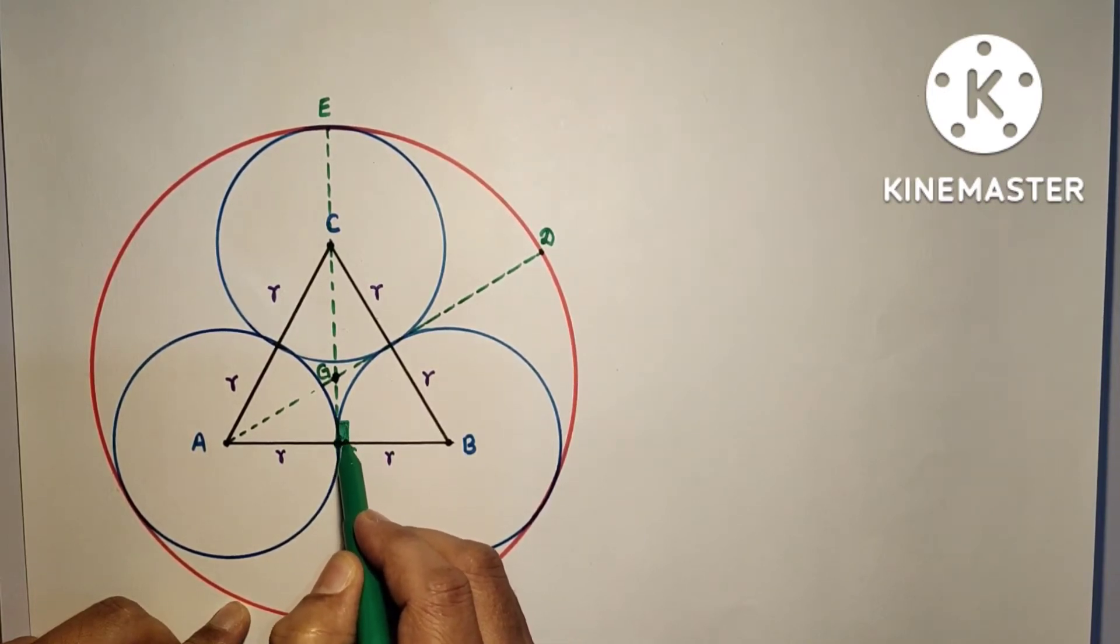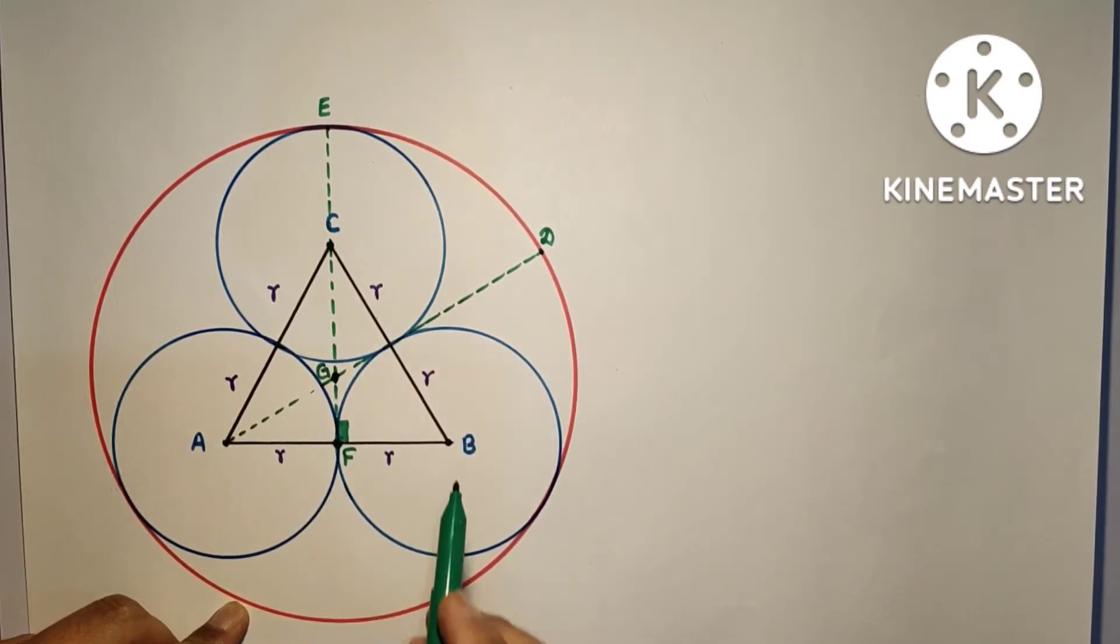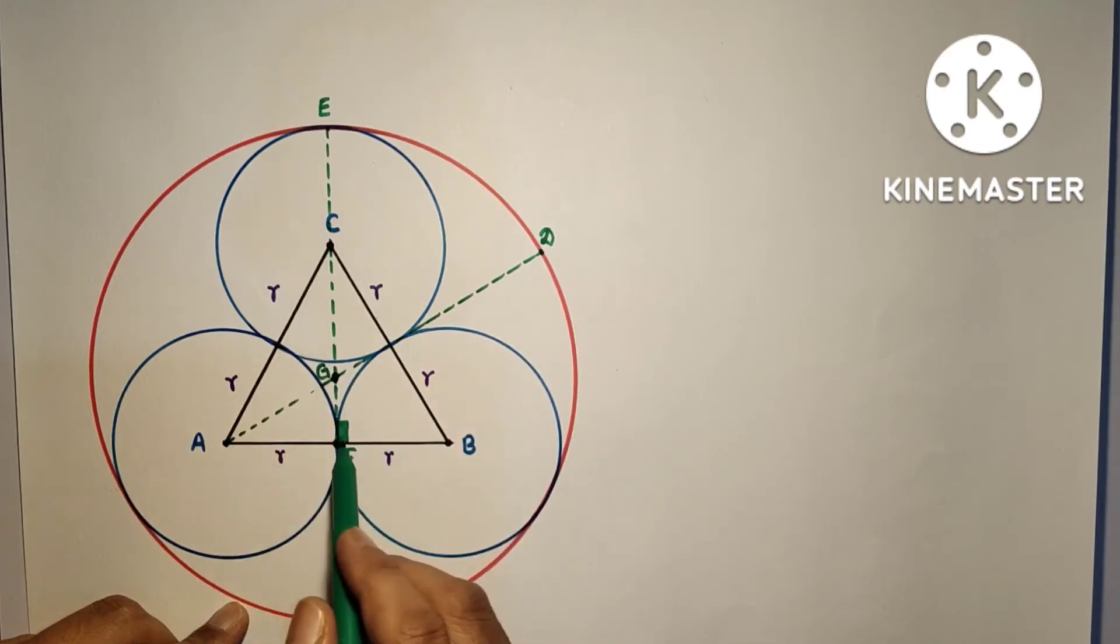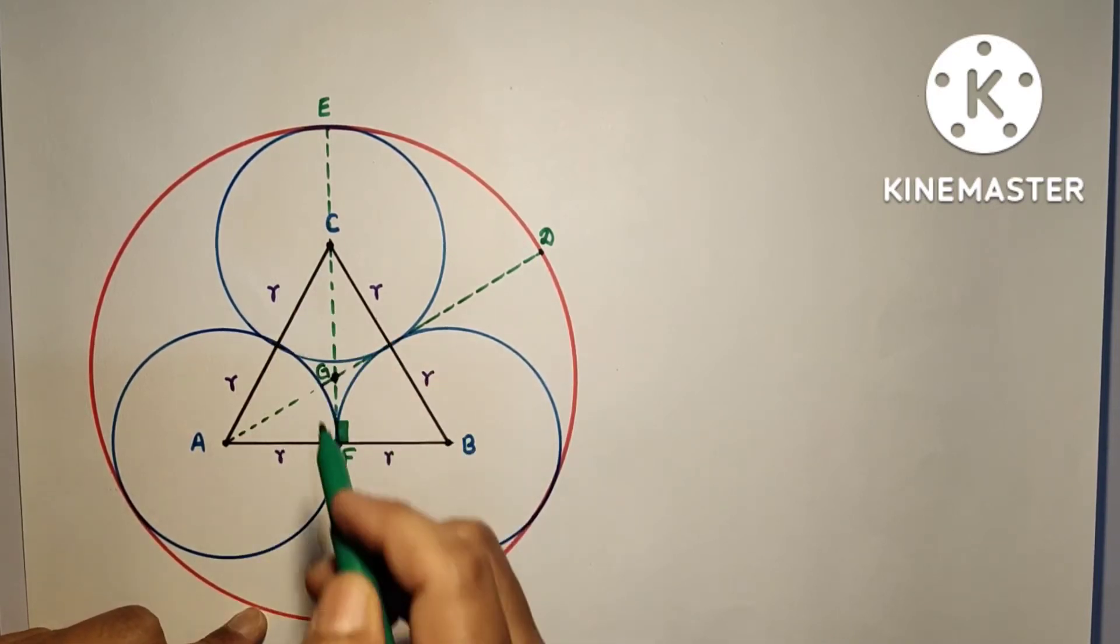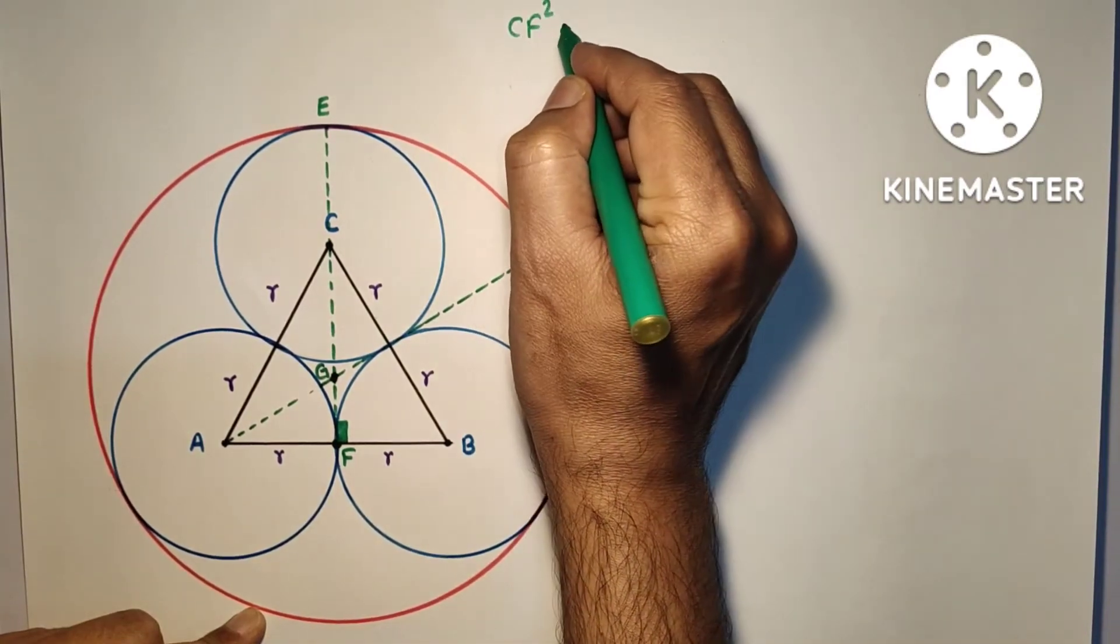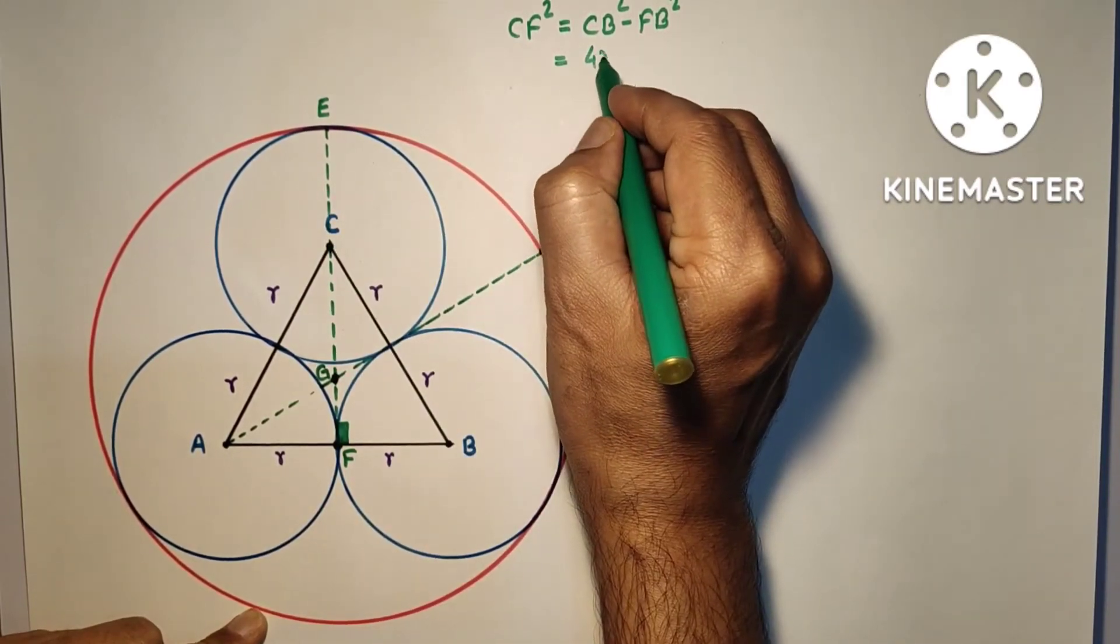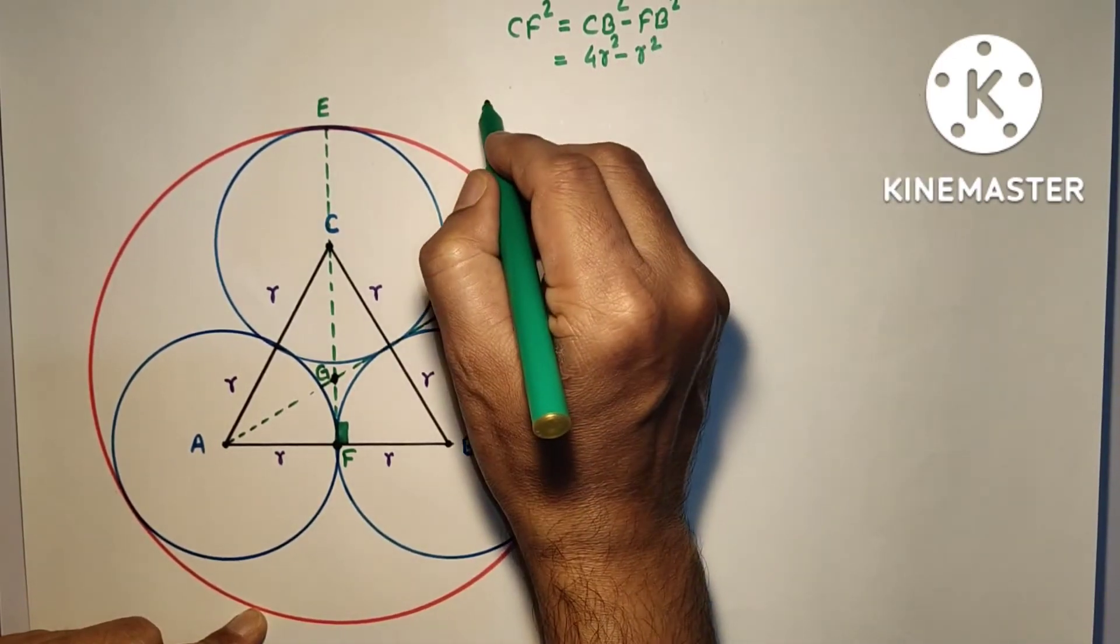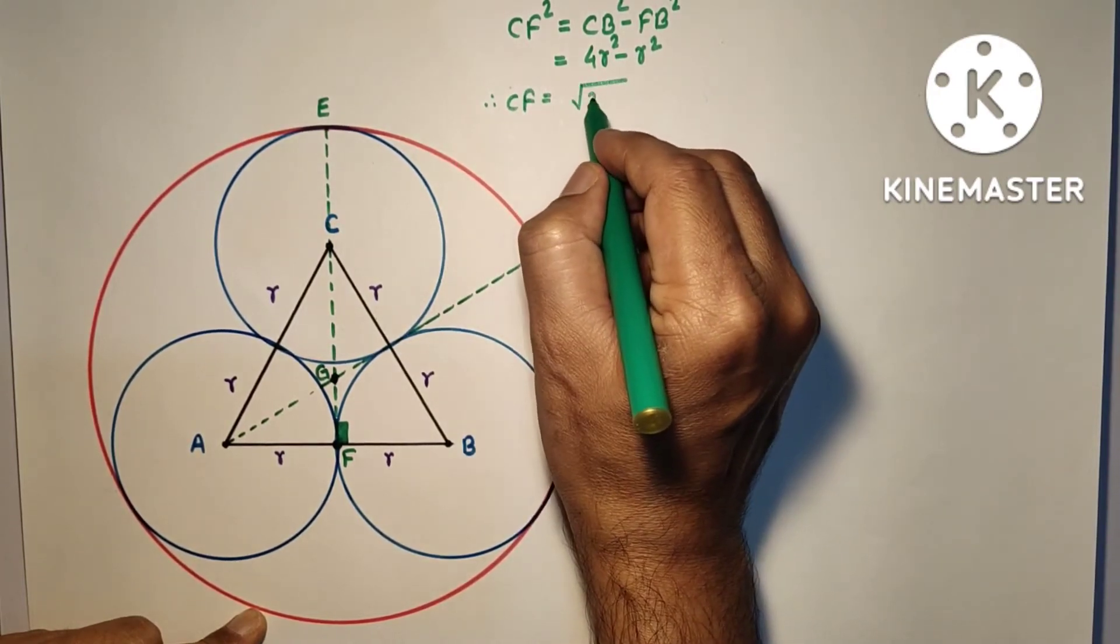This triangle CFB is a right angle triangle because this is equal to this and this side is this side, so congruent triangles and this is 90 degrees. Using Pythagoras theorem: CB² = CF² + FB². CF² equals CB² minus FB². CB is 2R, so 4R² minus R², which equals 3R², and that is R√3.